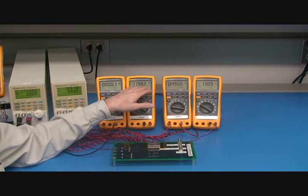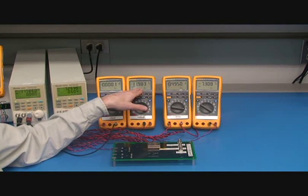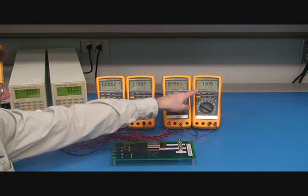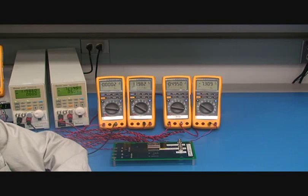And now with no load on the positive output, you see that the negative collapses to minus 7 volts. So this is a condition where you want to maintain, you always want to maintain some load on the positive output.